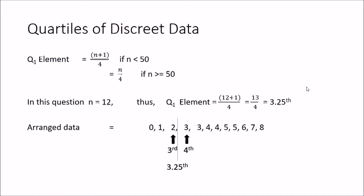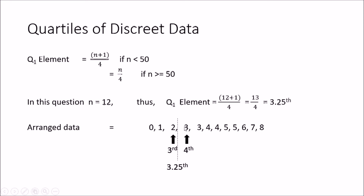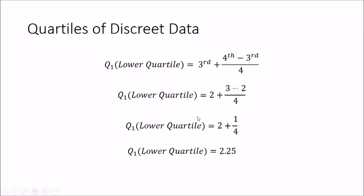We need to find the 3.25th element of the ordered data. The third element is 2 and the fourth element is 3, so 3.25 lies between these two. The lower quartile equals the third element plus one-quarter of (fourth minus third): 2 + (3−2)/4 = 2 + 0.25 = 2.25. So the lower quartile is 2.25.